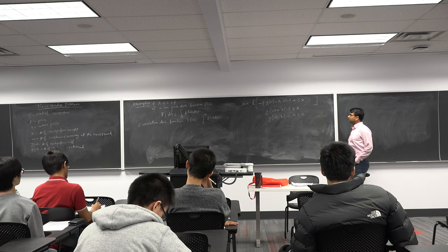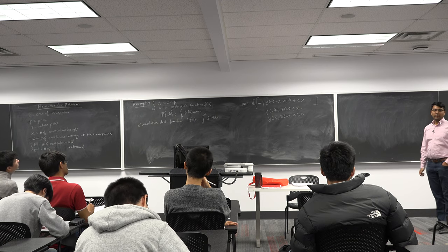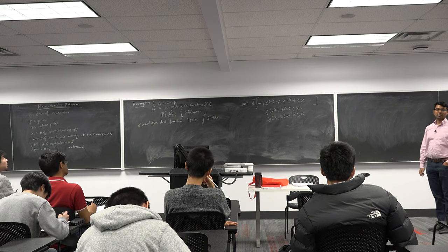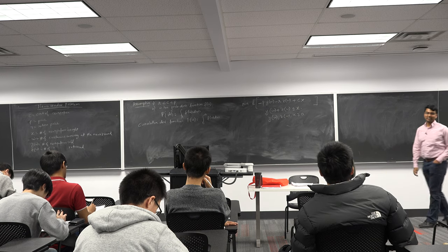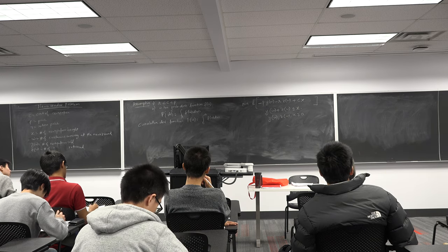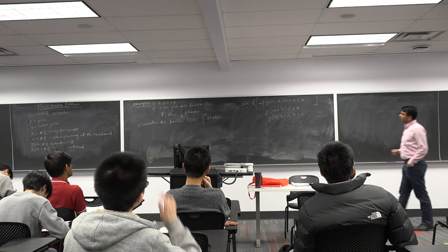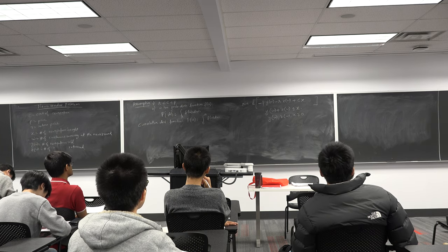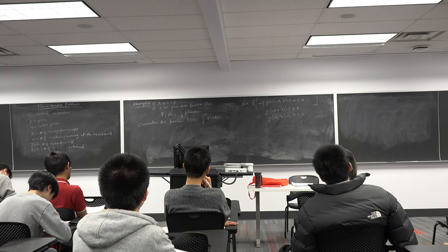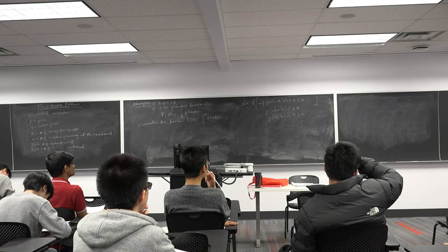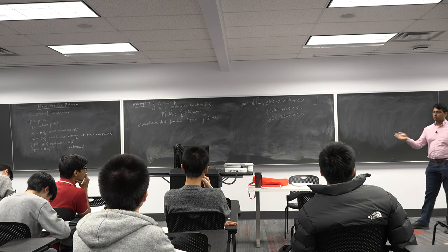This is the news vendor problem — one of the first problems you'll study in an optimization class in business school. To solve it, we split it into two stages using dynamic programming: in stage one you buy the newspapers, and in stage two you sell the newspapers and return whatever is left over.